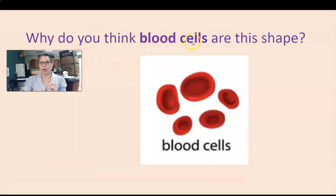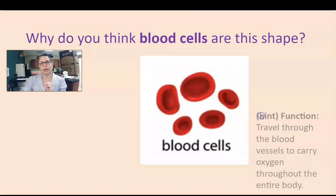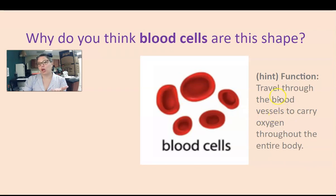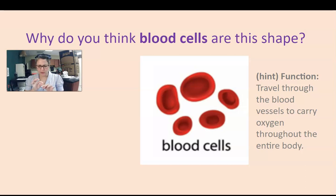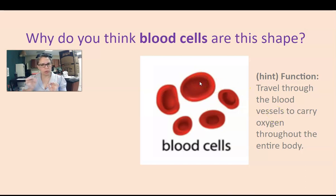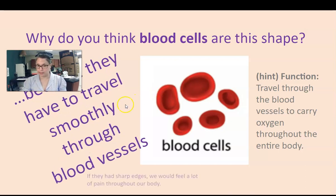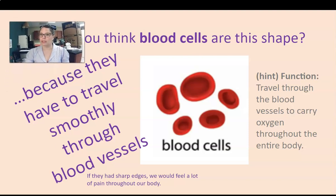Why do you think blood cells are this shape? They're circular, real soft around the edges. Why do you think their structure is round? Well, let's take a look at what their function is. Their job is to travel through blood vessels to carry oxygen all throughout the body. Blood vessels are these tiny tubes that go all throughout our bodies — some big, some very, very tiny, so tiny you can see the red ones in your eyes if you look closer to a mirror. These little guys need to travel all throughout these little tubes very smoothly so they don't get stuck. So why do you think blood cells are this shape? Because they have to travel smoothly through blood vessels.